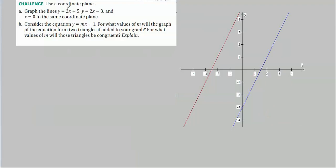Here, first they ask us to graph some lines — that's fairly easy. I've graphed the lines here. Notice the first two lines in slope intercept form have the same slope of two, so they're parallel, and luckily they look parallel. The line x equals zero is just a straight up and down line — that's the y-axis.